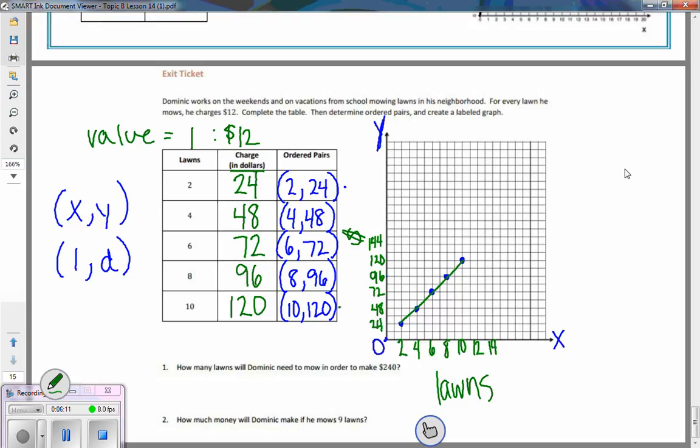What I've graphed is from here, the 2, 24, all the way up through the 10, 120. They connect to make a straight line, which means that I have an equation. My ratio chart is equal, so what I know for my equation is if I take the number of lawns and I times it by 12, I will always get the amount of dollars that he earned.